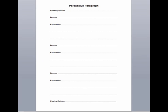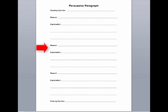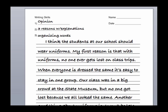A persuasive paragraph has a predictable form. Your beginning has to tell your reader what you think of the question. Then you provide your strongest reason, followed by a sentence or sentences that explains your reason in different words. You continue this pattern with a second reason and explanation, and a third reason and explanation, then finish by restating your opinion.